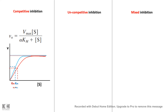When there is no inhibition, alpha equals 1. The curve shifts slightly rightward, reflecting the increased Km values, but the Vmax is unchanged, as you can see from the graph.